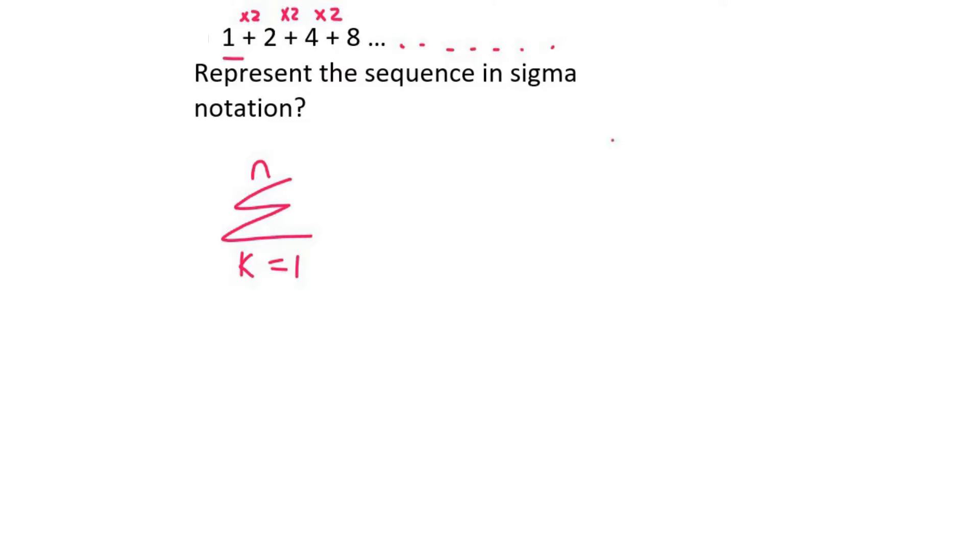So what you do now is you get the tn formula of a geometric sequence. And so a would be term 1, which is 1, r is 2, and then n minus 1.